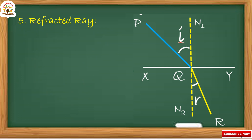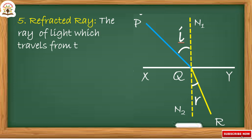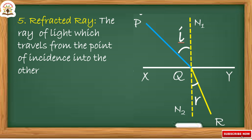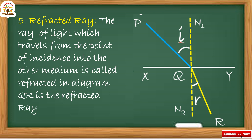The refracted ray is the ray of light which travels from the point of incidence into another medium. This is called the refracted ray.